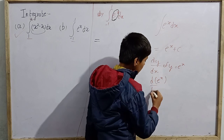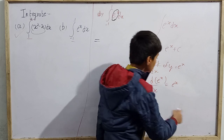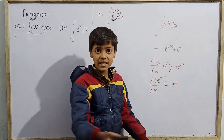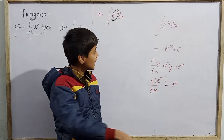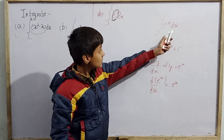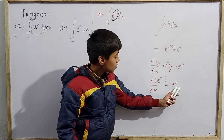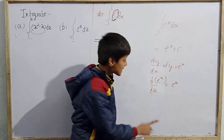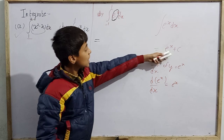This is because the differentiation of e^x is e^x itself, and since integration is the reverse of differentiation, the integral of e^x is e^x plus constant of integration c.